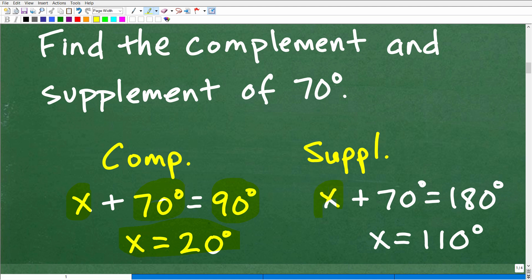And supplementary angles is going to be that angle or the supplement plus the angle in question, 70 degrees. We know that the sum is going to be 180 degrees. So when I solve this little equation here, that's going to be 110 degrees.